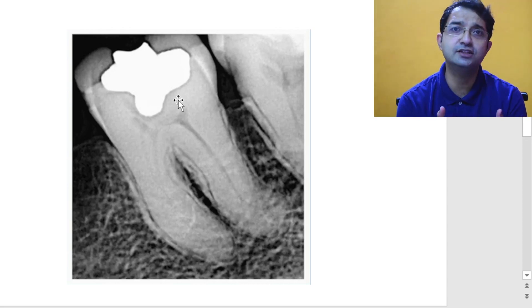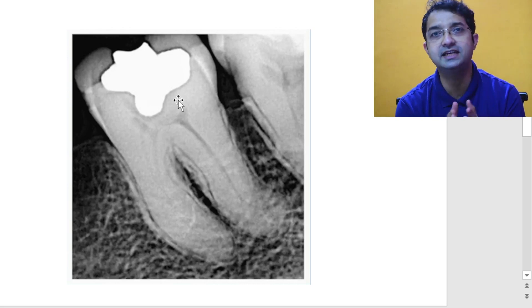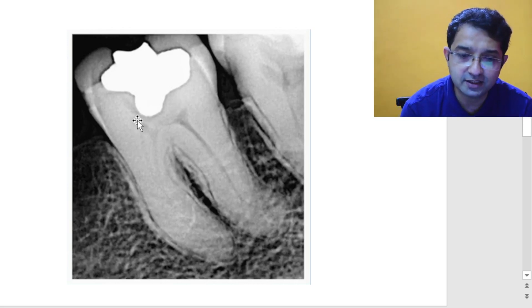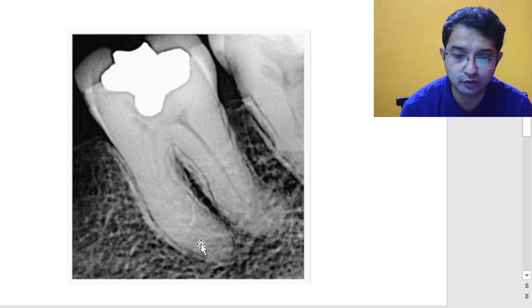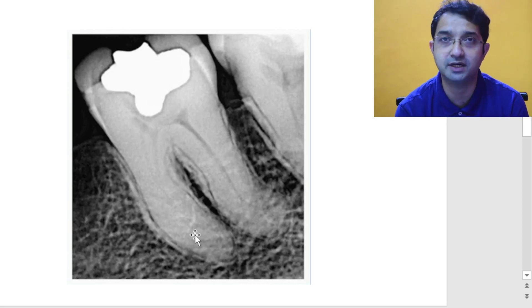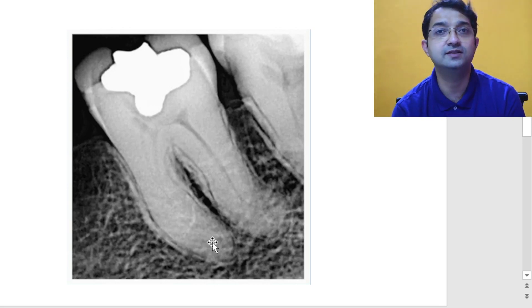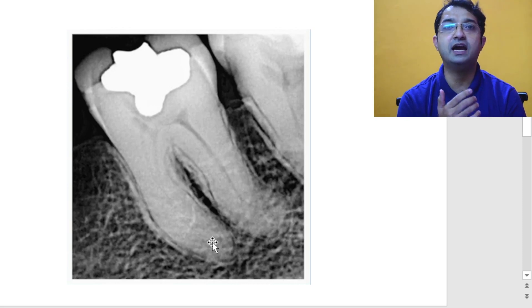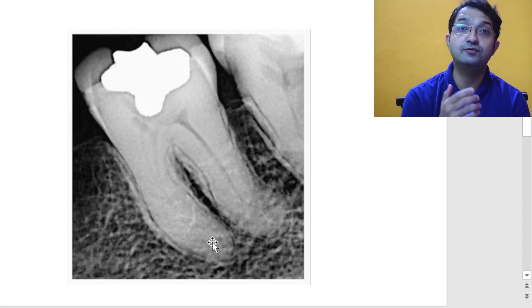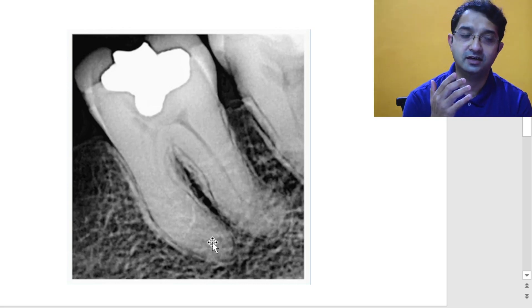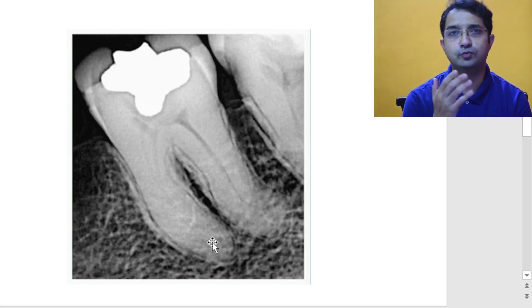In such situations, it is always better to take mid-treatment radiographs if you are finding it difficult to locate the canals. Apart from that, you can also appreciate that in the mesial root you cannot see the root canals. In such situations, if you have a very thin canal or cannot see the root canals in the root, you should be ready to enlarge the canals with smaller instruments.